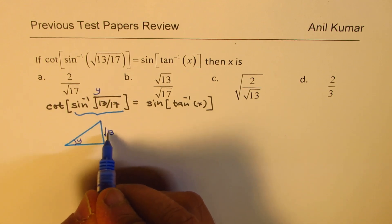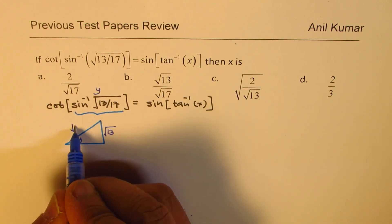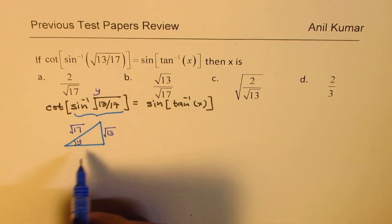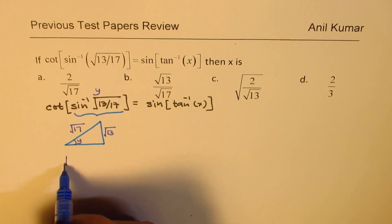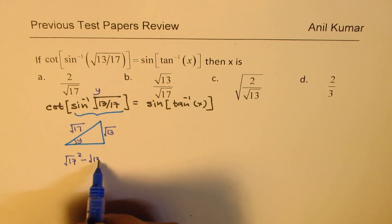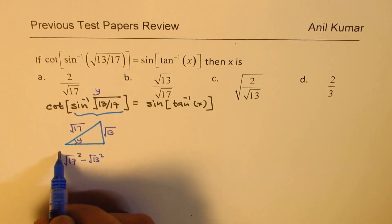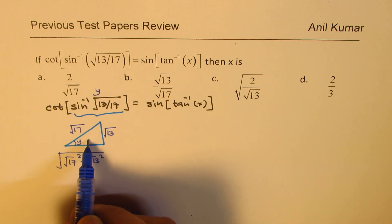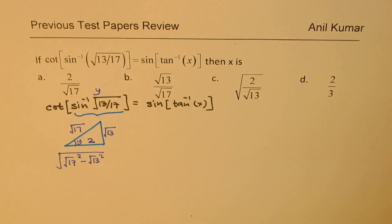In that case, sine is opposite over hypotenuse, so we get square root of 13 here and square root of 17 there. This side will be square root of 17 square minus square root of 13 square, which is 17 minus 13, equals 4. Square root is 2, so we get 2 as this particular side.